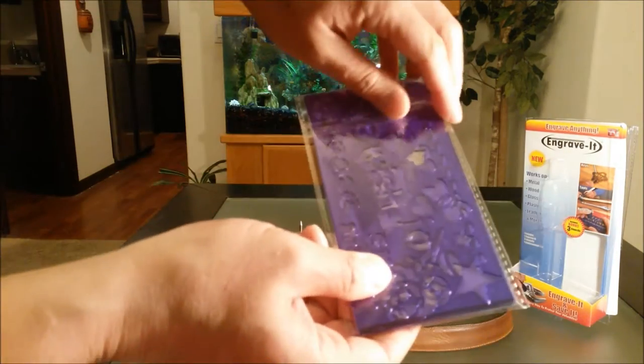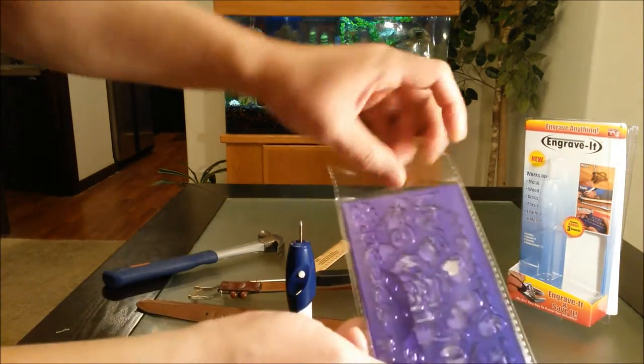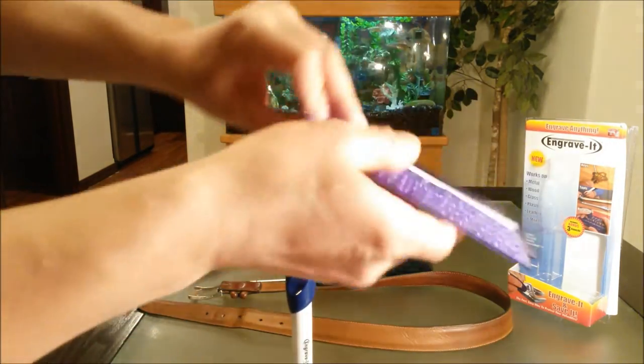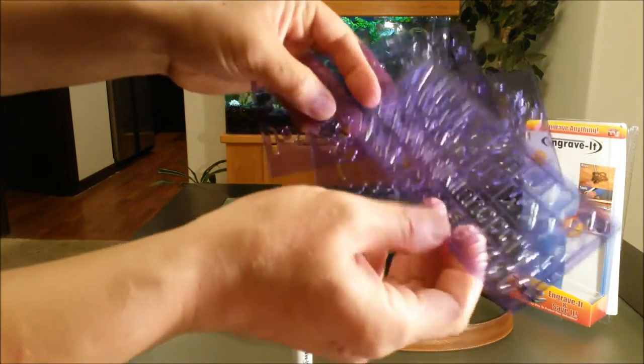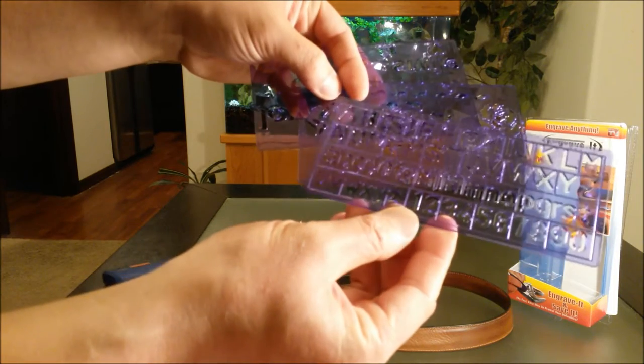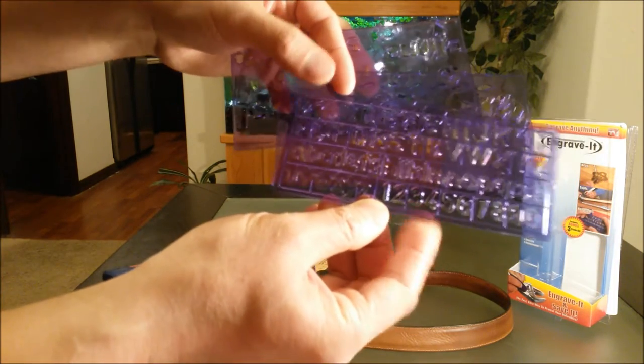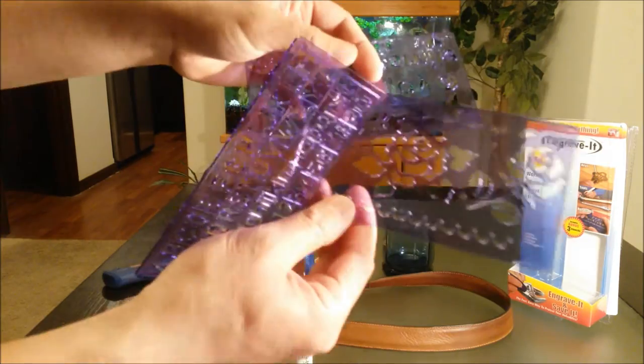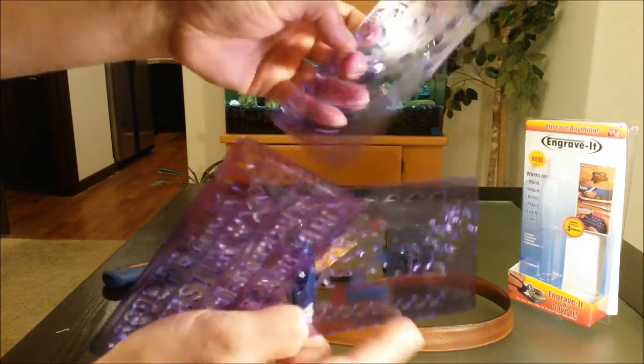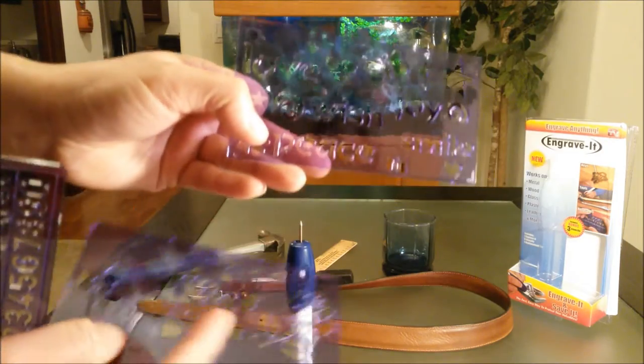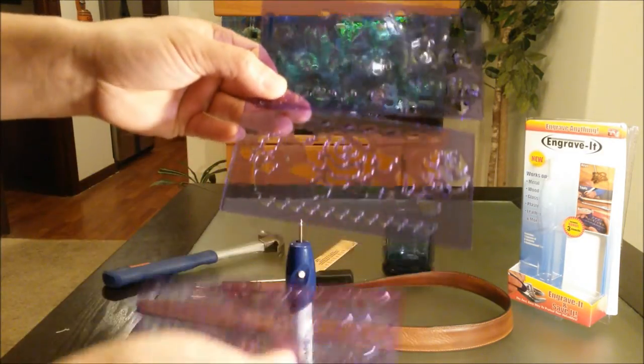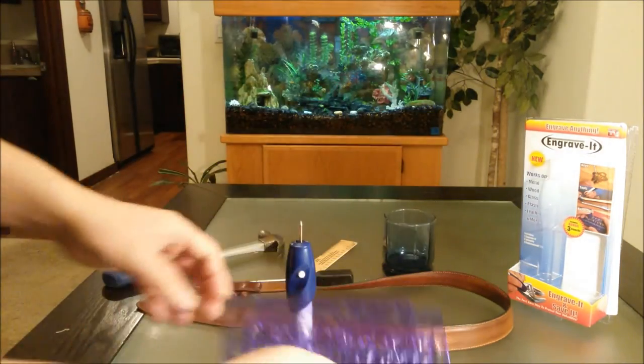And here is the stencil set - plastic, made of plastic, purple color. Three sets: you have your alphabets, capital letters, lowercase letters. One through zero, you have the flower set, and some additional gimmick words or symbols. Let's put this to good use.